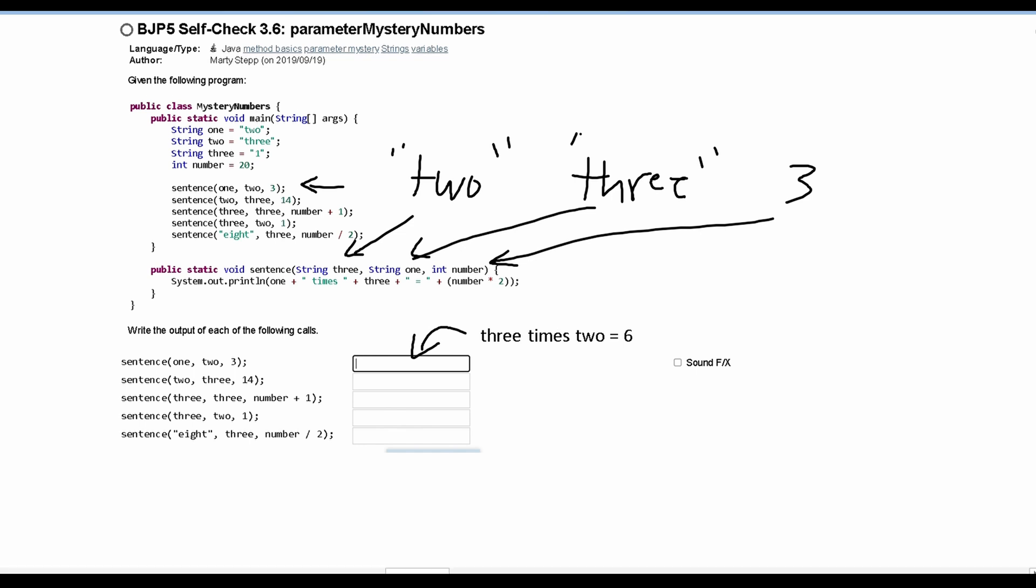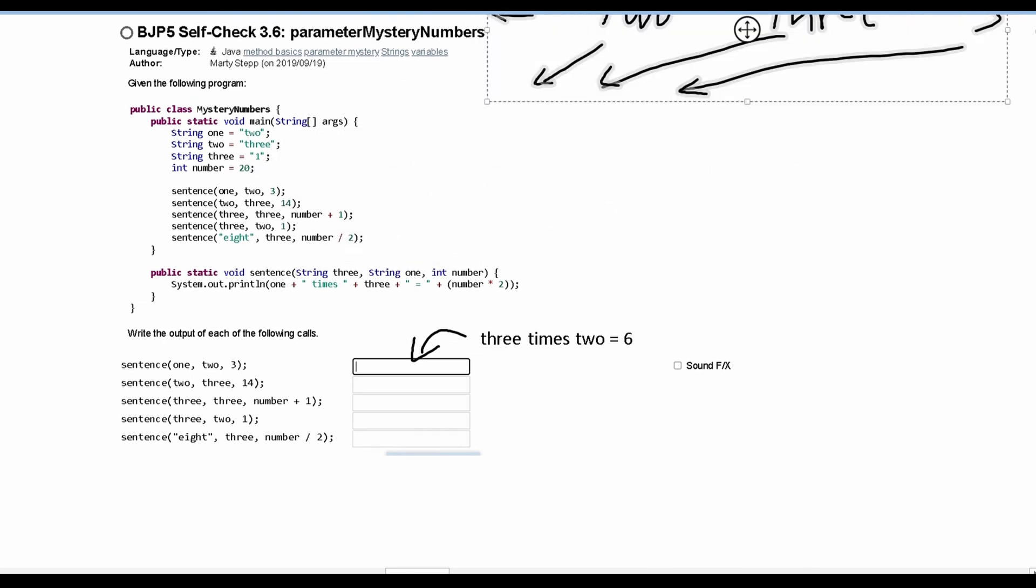For our next method call, we can get rid of this. We can just move it aside. And we can look at this part right here, where we have 2, 3, and 14 passed in. Well, 2 is the string 3, and 3 is the string 1. And then number, we have as 14.